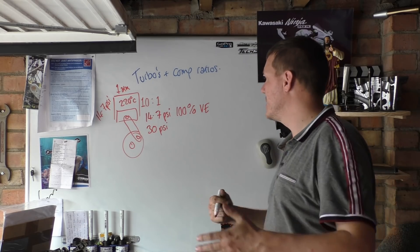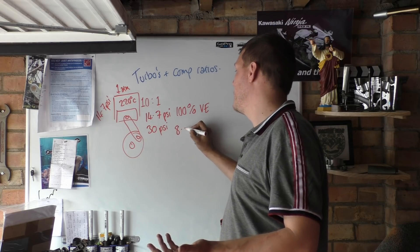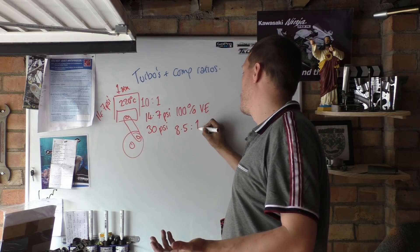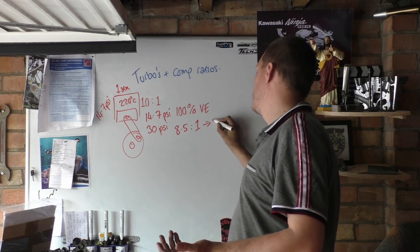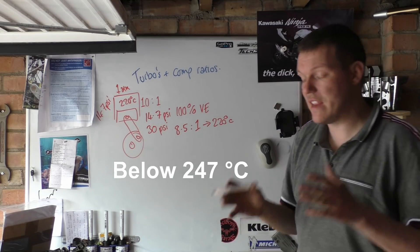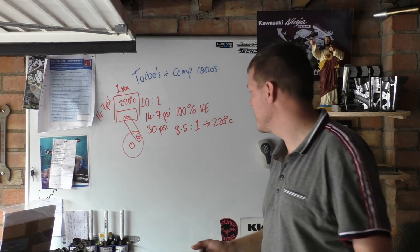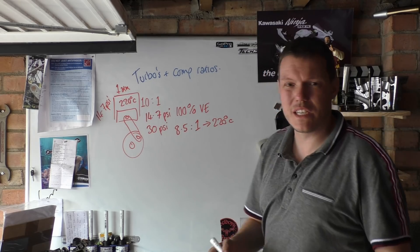Basically we've compressed it and we're getting to something like 8.5 to 1 when we reach 220 degrees C, which is the highest we want to go because any higher than that will mean pre-ignition detonation. Bad things happen. But we're compressing to 10 to 1.